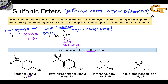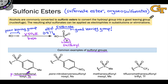Probably the most common sulfonates are toluene sulfonates, or tosylates as they're called. The abbreviation Ts stands specifically for the toluene sulfonyl group — SO₂ with the sulfur linked to a para-toluene group. This should really read para-toluene sulfonyl, since the methyl group is located para to the sulfonyl group.